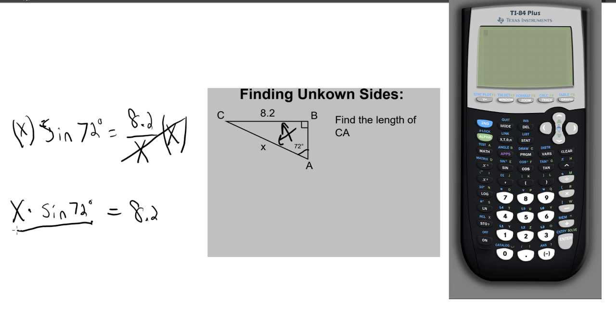So you're going to divide by the sine of 72 degrees. Divide by sine of 72 and what you do to one side you have to do to the other. These will then cancel out. You get X equals 8.2 divided by the sine of 72 degrees.